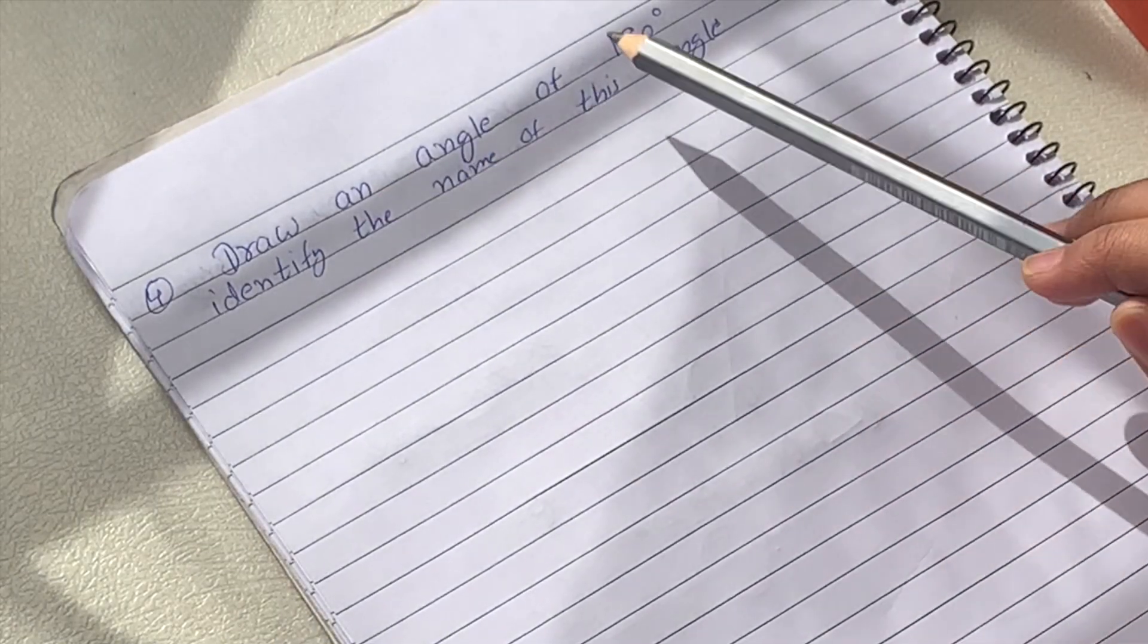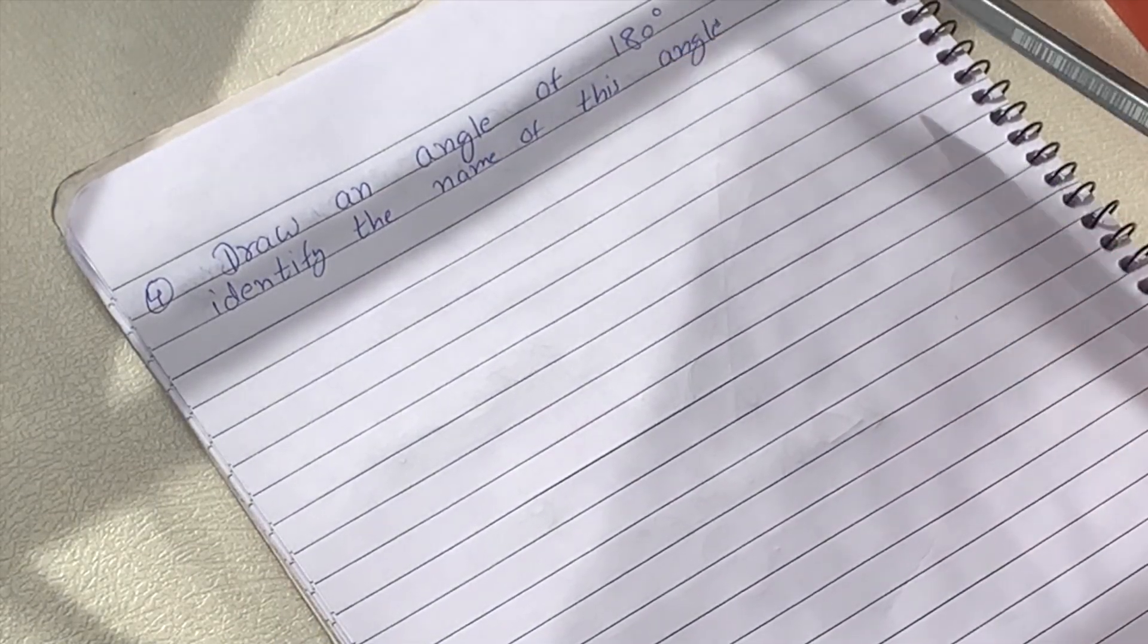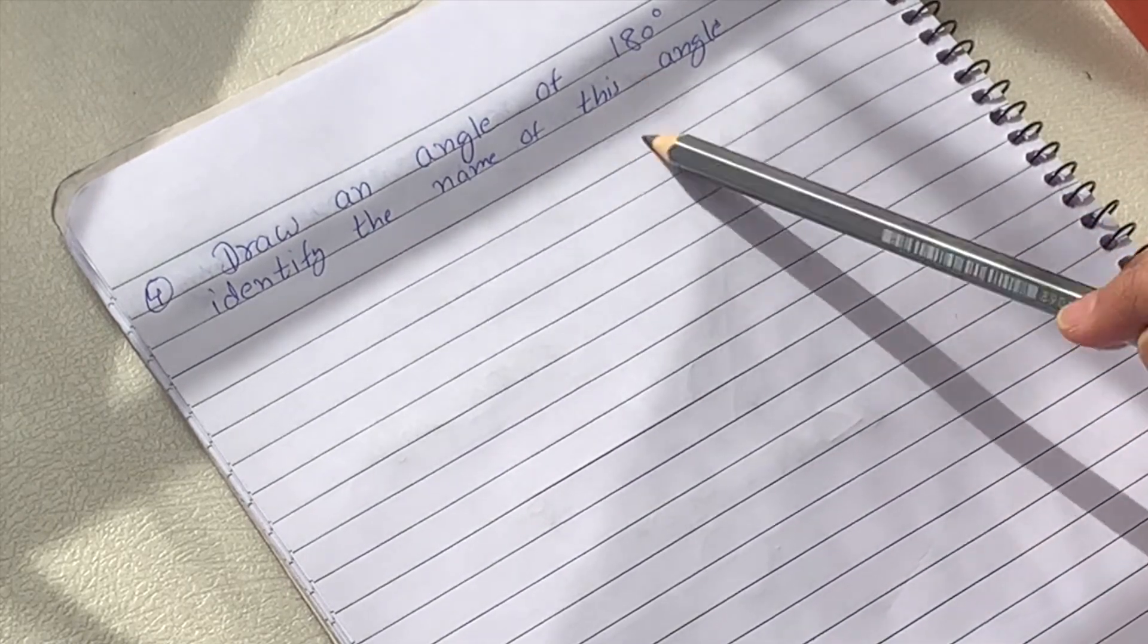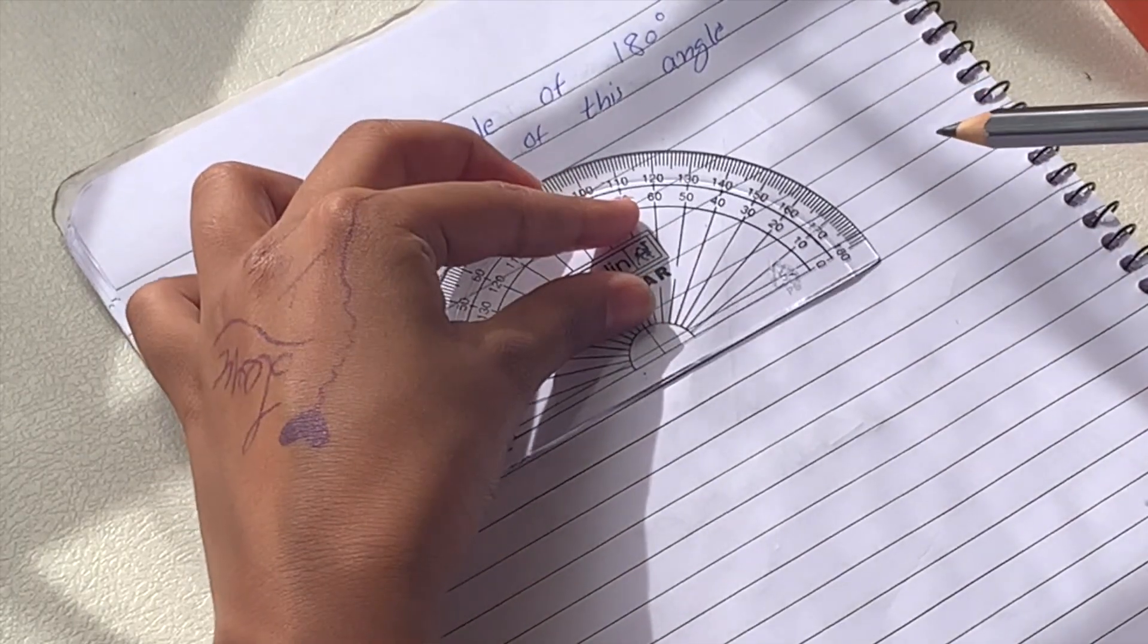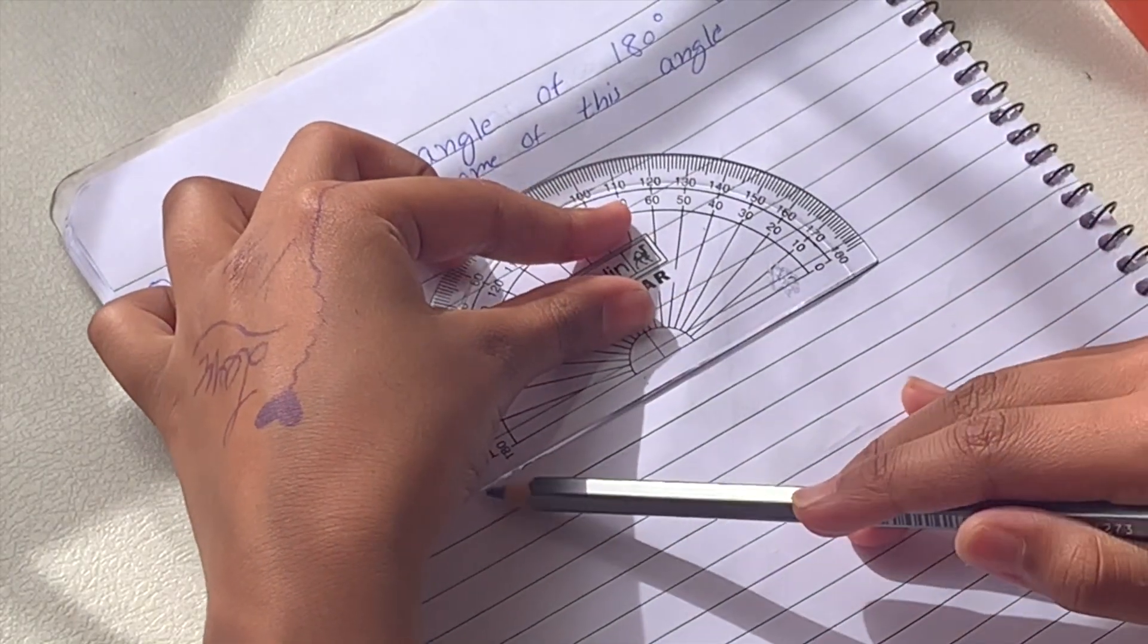Draw an angle of 180 degrees and identify this angle. We will take our protractor, pull a line.